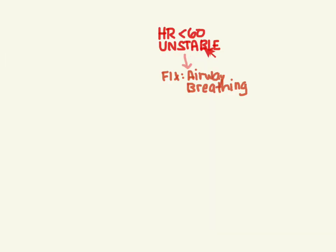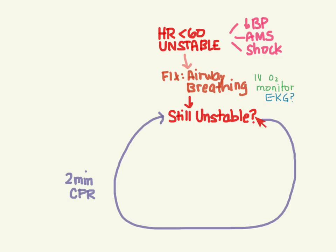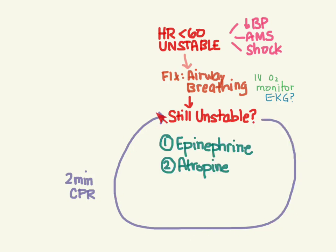In review: if the patient is bradycardic and unstable — meaning low blood pressure, altered mental status, or other signs of poor perfusion like shock — the first thing you do is fix the airway and breathing, because that's usually the cause in kids. Do your typical ER mantra: IV, O2, monitor, and get an EKG if you can. If they're still unstable, do two minutes of CPR before you check again. After two minutes of CPR, if they're still unstable, give epi first, continue CPR, then give atropine. If atropine doesn't work, then try pacing.